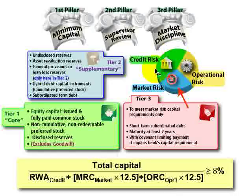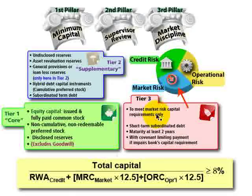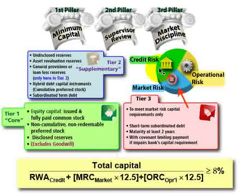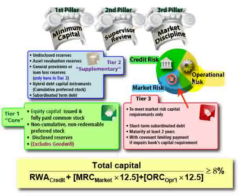That original Accord only addressed credit risk — really only included credit risk in the denominator. The 1996 Amendment for Market Risk was then added, and this has been almost entirely preserved in the Basel II framework. So the original Accord included credit risk; the 1996 Amendment added market risk. Basel II itself then added operational risk.